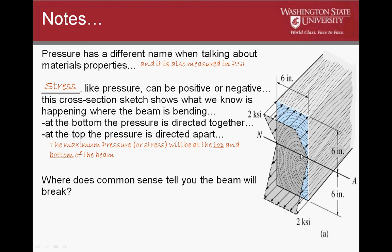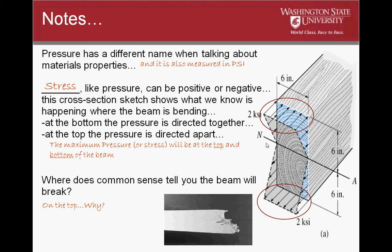If you remember back to a few slides ago when we had the different squares, that center line was the same length on both pictures of the beams. So where does common sense tell you that this beam is going to break? At the top. Why? Because materials act differently in tension versus compression. This particular type of material, being wood, cannot hold a lot of tensile stress. However, it does very well in compression.